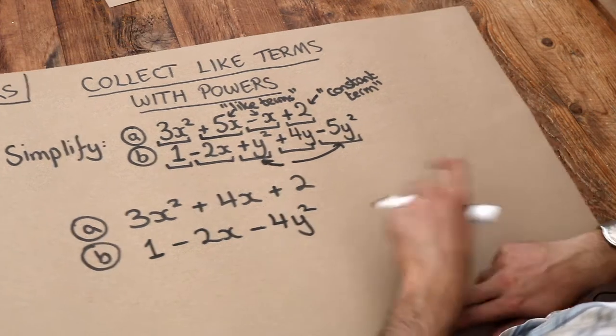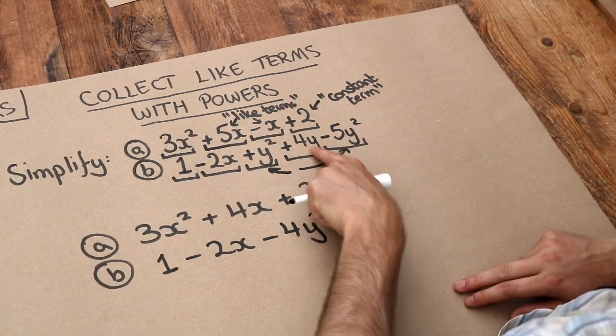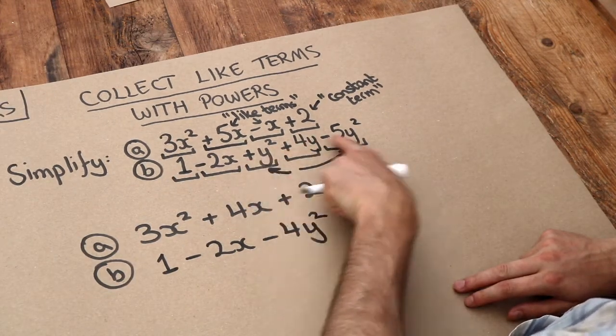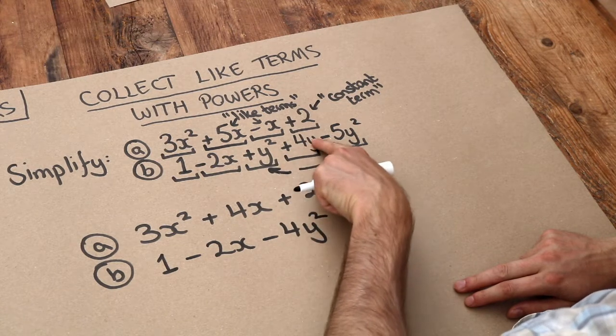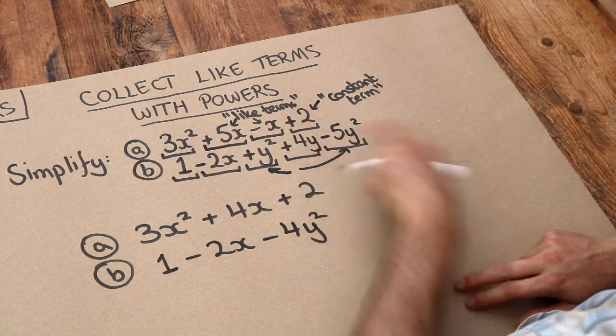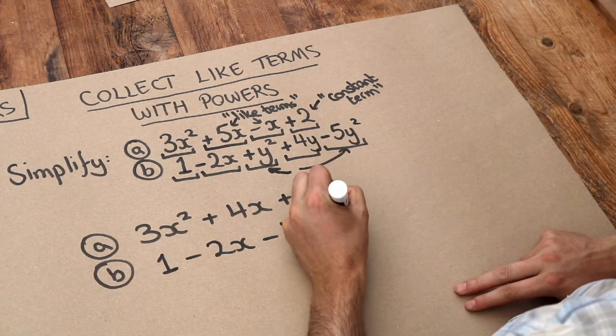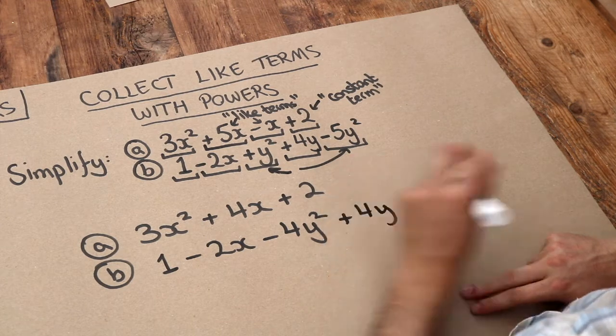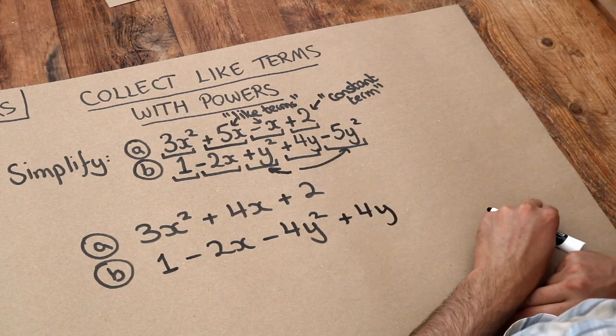And then finally, we've got this y term, which is different from the y squared terms because this does not have a power on the y. And so we just write the plus four y like that.